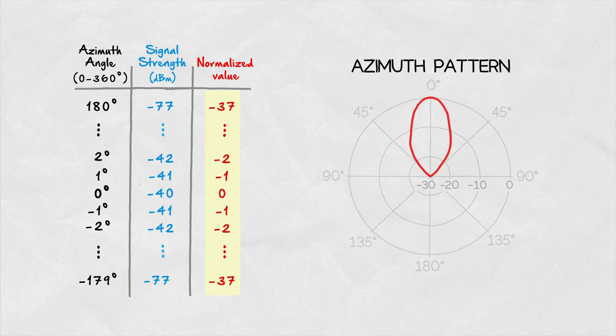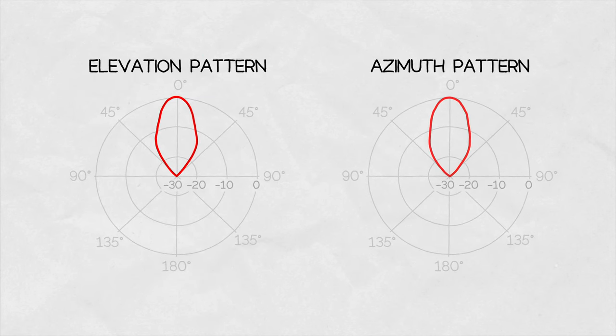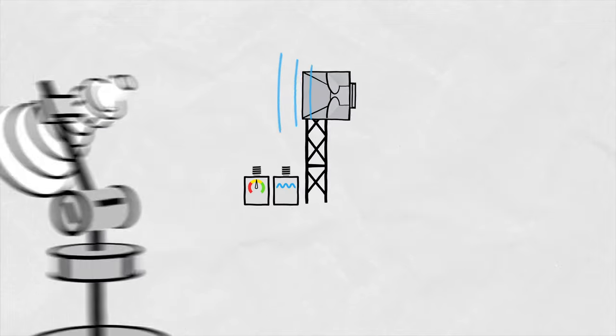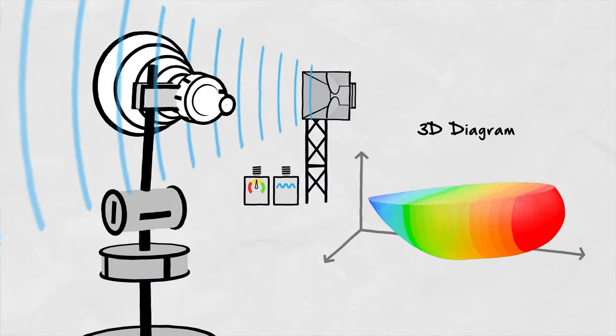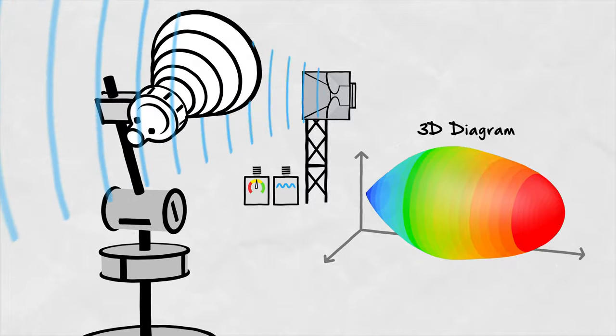This is usually done in the azimuth and elevation plane as these are most commonly used in antenna documentation. However, for a full 3D radiation diagram, the antenna has to be measured in many more points which takes a considerable amount of time.